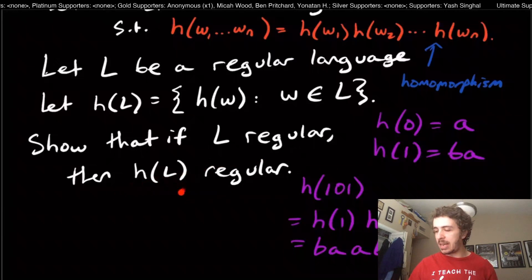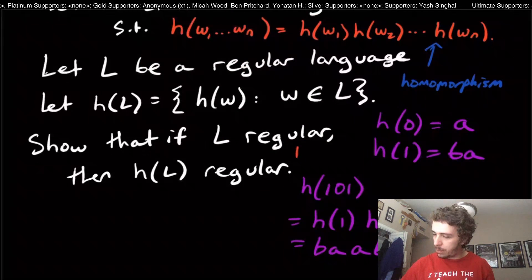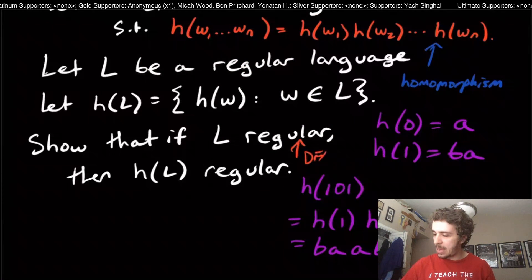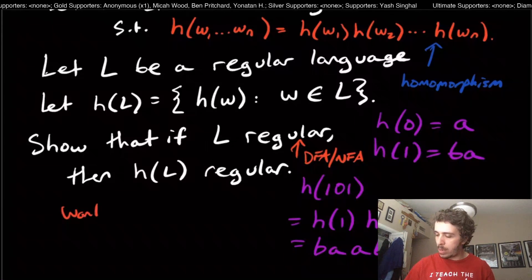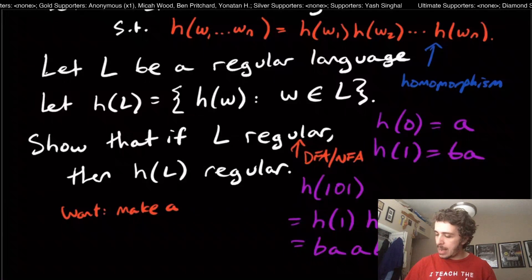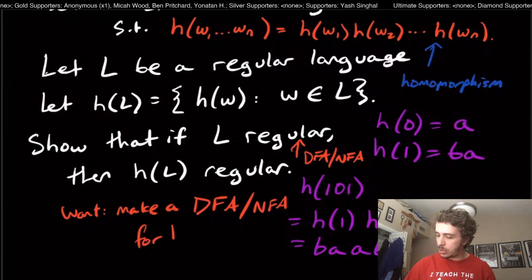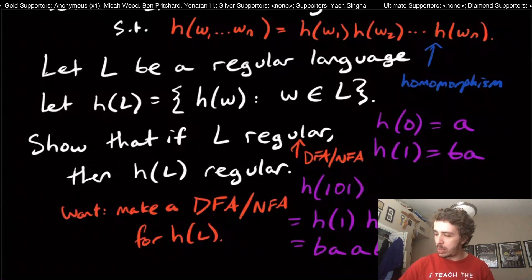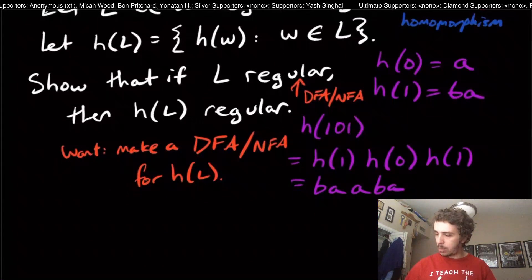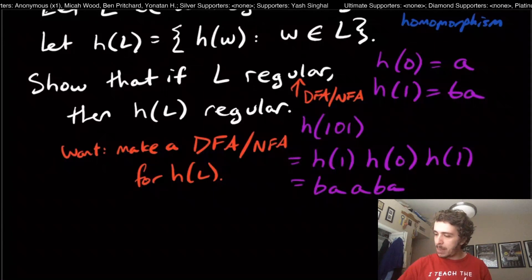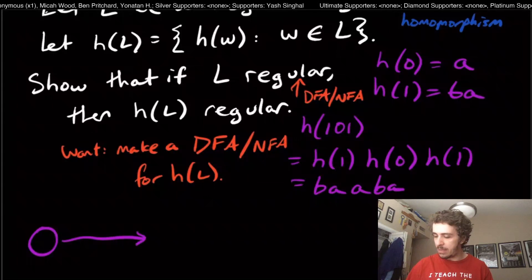We want to show that if L is regular then H(L) is regular. We know if L is regular there's a DFA or NFA for it, and what we want to do is make a DFA or NFA for H(L) — that's what it means to show it's regular. So how do we do that? Let's think about what a transition looks like in the original DFA or NFA.